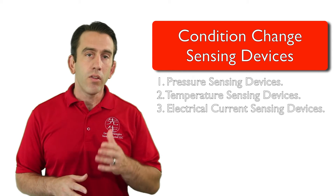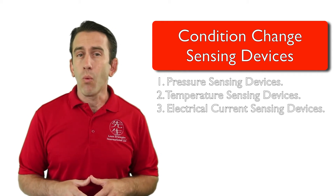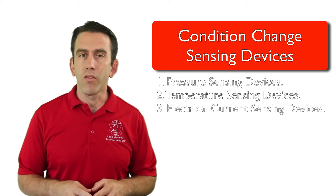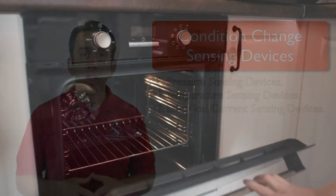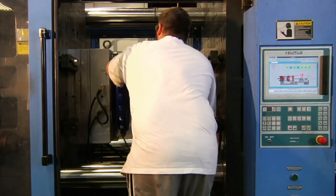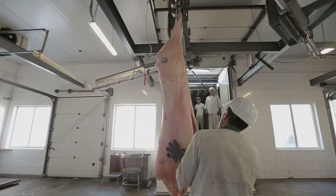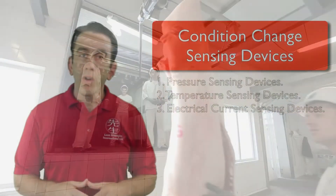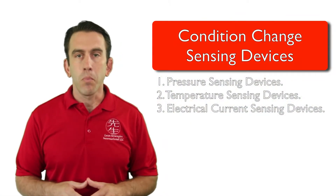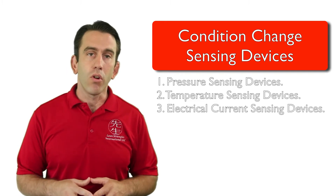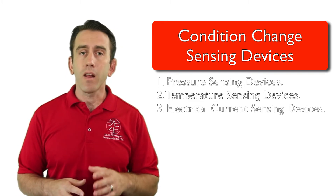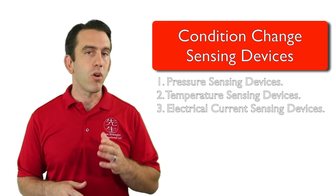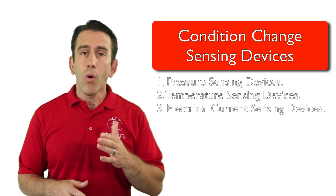Thermometers, thermostats, and temperature gauges are different tools that can be used to sense temperature changes. Some examples of different processes where you might want to use a temperature sensing device may be preheating an oven, warming up injection molding machines, preheating dies, and freezers that need to maintain a specific temperature. Like other forms of poka-yoke, if the device finds that the temperature is not correct, it may warn the user with a signal or automatically adjust the temperature by turning it up, down, or even shutting it off.